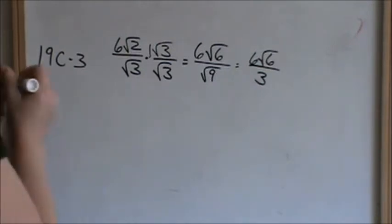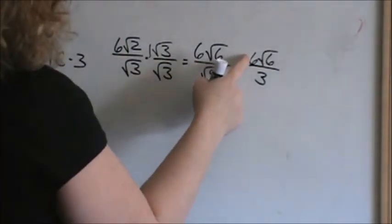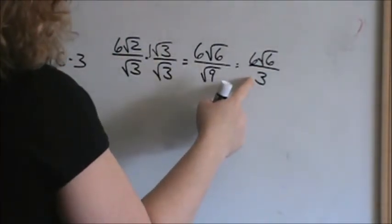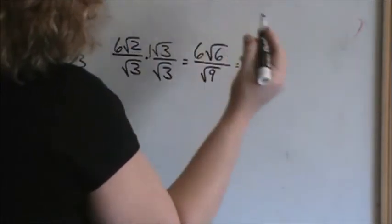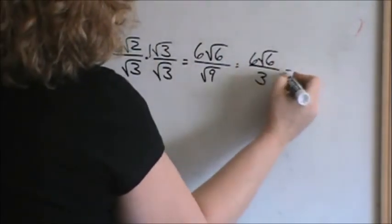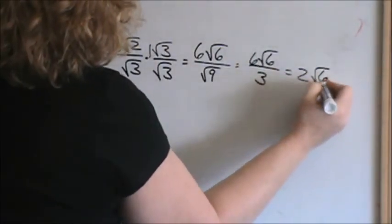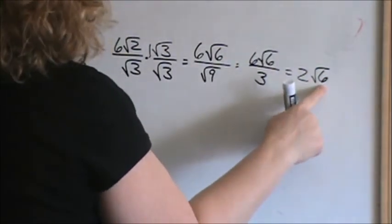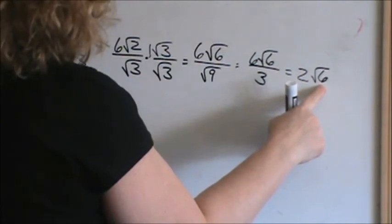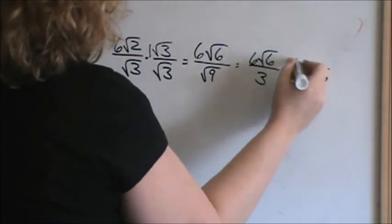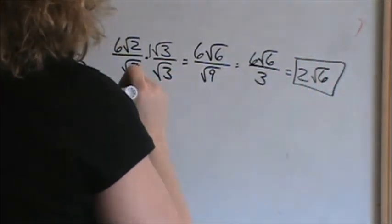Now, you reduce your whole numbers. 3 will divide into 6 — that would be 2 square root of 6. And square root of 6 does not simplify any more than that, so you leave it as 2 square root of 6.